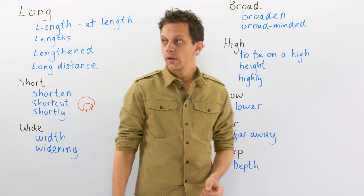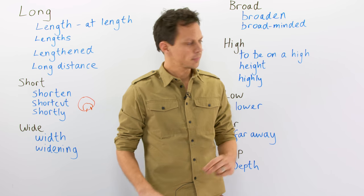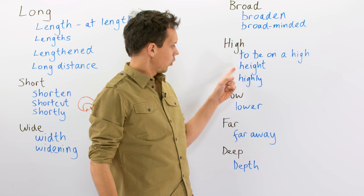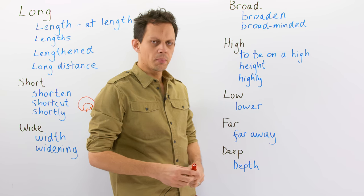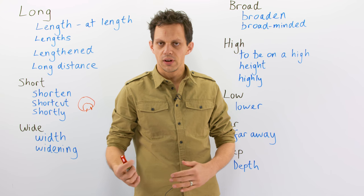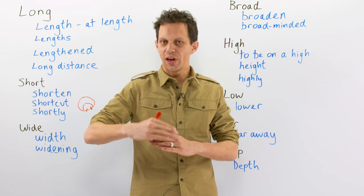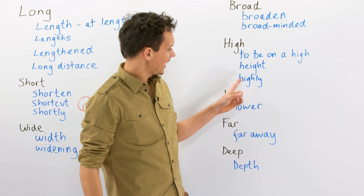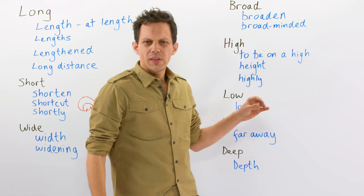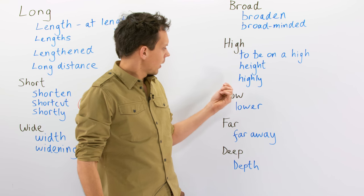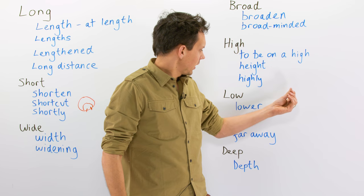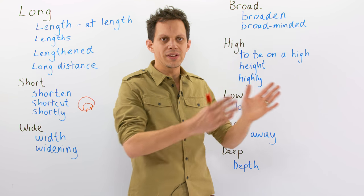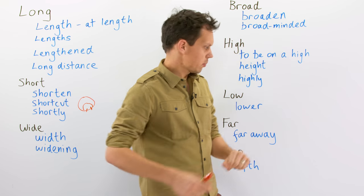Height. My girlfriend's height is six foot one. The height of something — or you could use it to measure something more abstract, like passion. The height of our passion. Highly — this is a synonym of very. The highly sought-after professor. It means everyone wanted to hear from the professor.